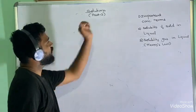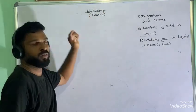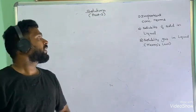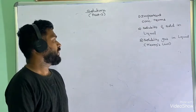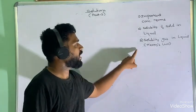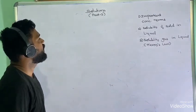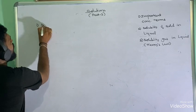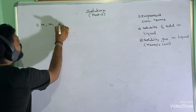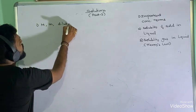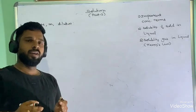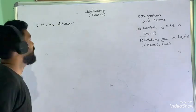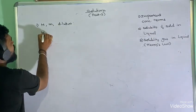Hi students. We are discussing solution part 1, covering important concentration terms and solubility of solid in liquids, and solubility of gas in liquids with Henry's law. First, the important concentration terms: molarity, molality, and dilution — these three things will be important while discussing colligative properties.